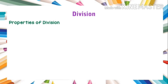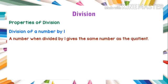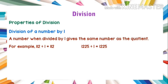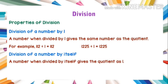Now let's see some properties of division. There are certain properties of division. First, division of a number by 1: a number when divided by 1 gives the same number as the quotient. For example, 112 divided by 1 is equal to 112, and 1225 divided by 1 is equal to 1225.